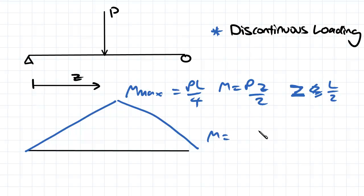But then when z is greater than L over 2, M equals Pz over 2 minus P(z minus L over 2). So we've got a completely different equation here when z is greater than or equal to L over 2.